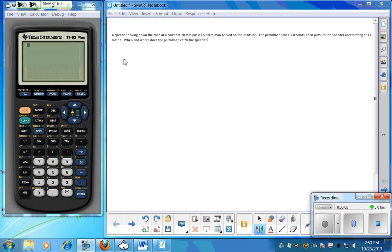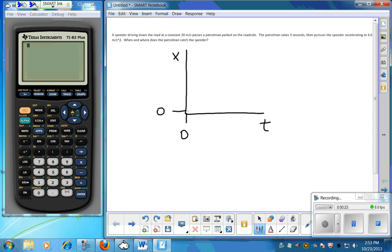Okay, so we're going to sketch this problem on a position versus time graph. We're going to say that zero time is when the speeder passes the patrolman and zero position is the spot on the road where the passing takes place. Our speeder is just cruising along here at a nice constant velocity, and we know that is 20 meters per second, so a lowly 40 miles per hour here.